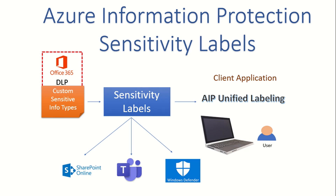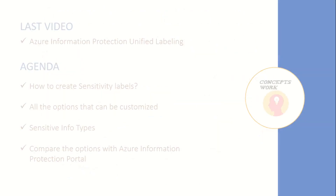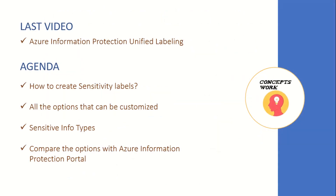Welcome back to our channel. In this video we are going to talk about Azure Information Protection sensitivity labels. The agenda for this video will be: knowing how to create sensitivity labels, what options can be customized on the unified labeling portal, how to create a custom sensitive info type, and lastly a comparison between the AIP portal and the new AIP unified labeling portal.